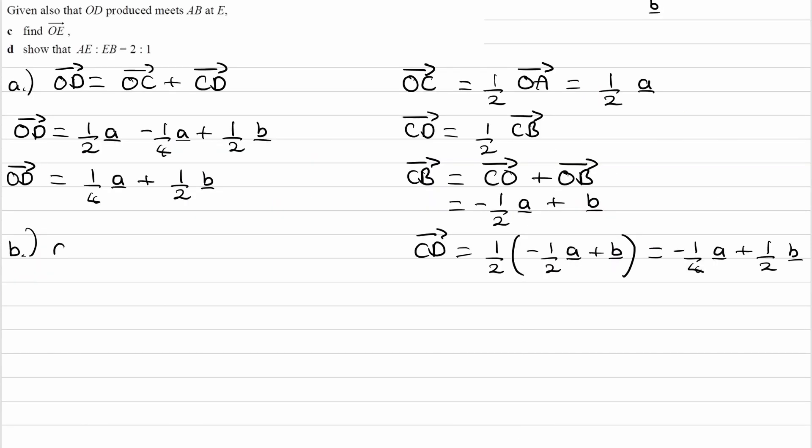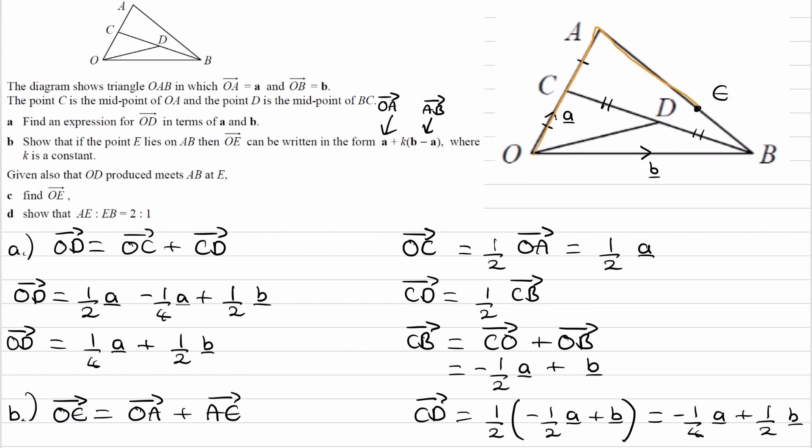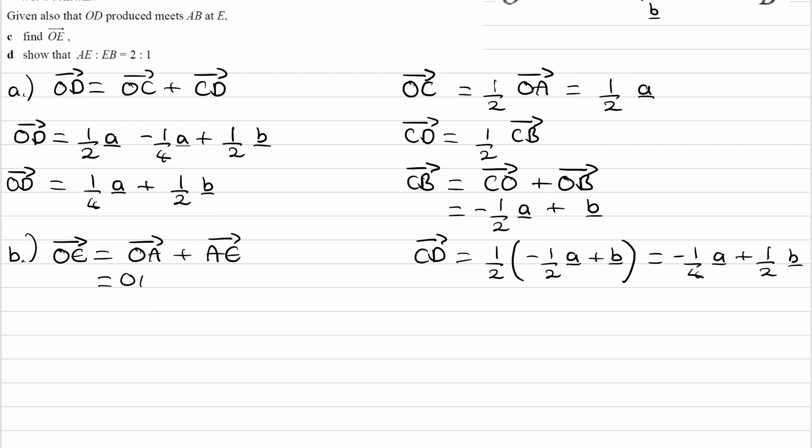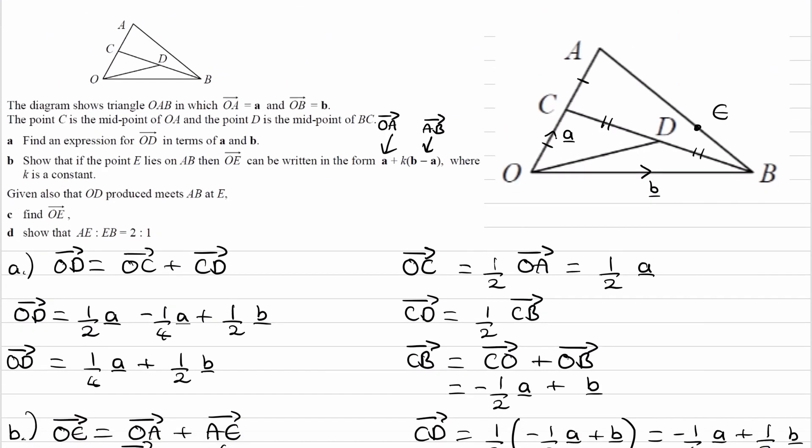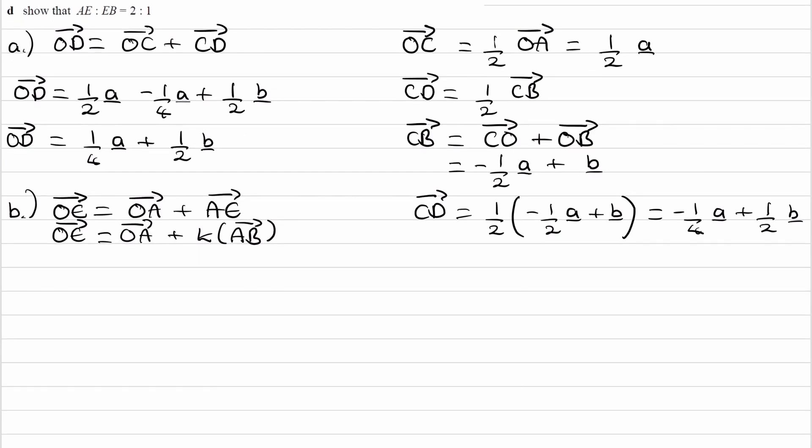Let's write that down. So OE is OA plus AE. Just going back up to the diagram, we can see that here. And AE is a scalar multiple of the full vector AB. We can work out what AB is. AB is AO plus OB, which is minus A plus B, so this is just B minus A. So we can then replace everything with the vectors A and B. So it would be A plus K times B minus A. That's part B done.